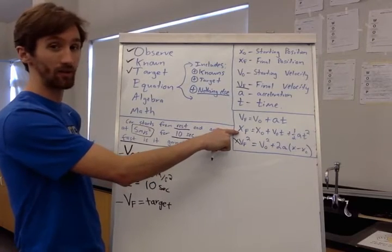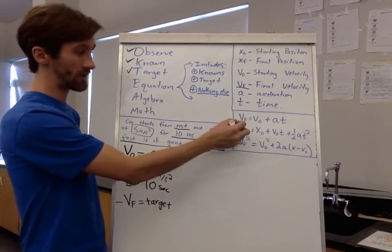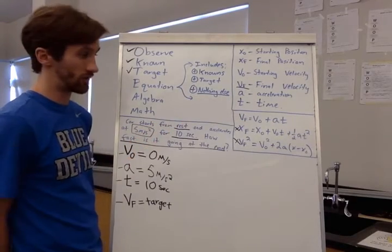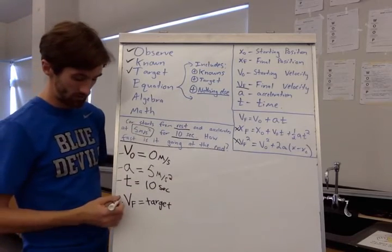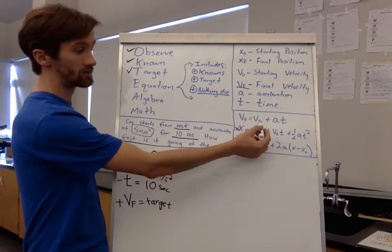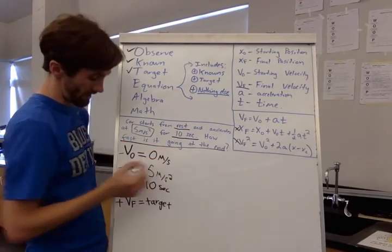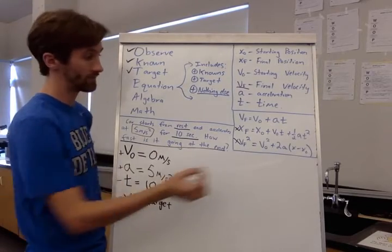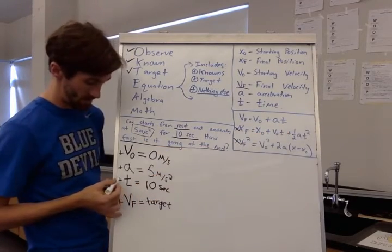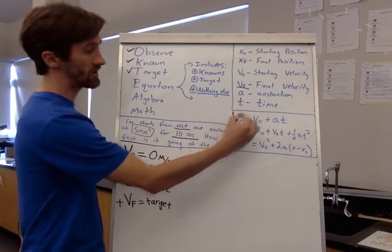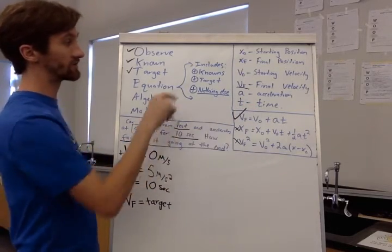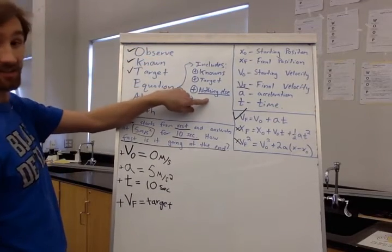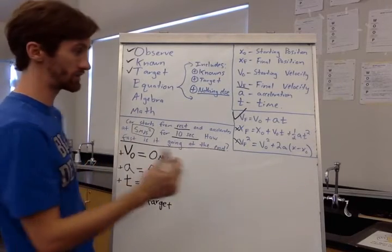The first equation has final velocity — yes, I have that. Initial velocity — I have that. Acceleration — I have that. And time — I have that. So this first equation has all of my knowns, has my target, and doesn't have anything else. This is the equation I want to use: Vf equals V₀ plus A times T.